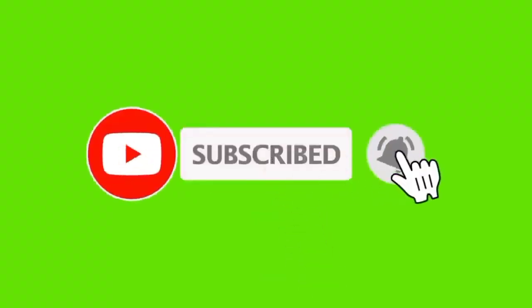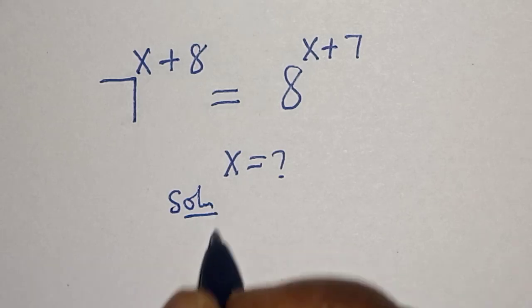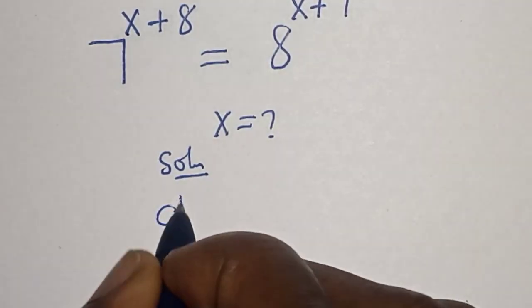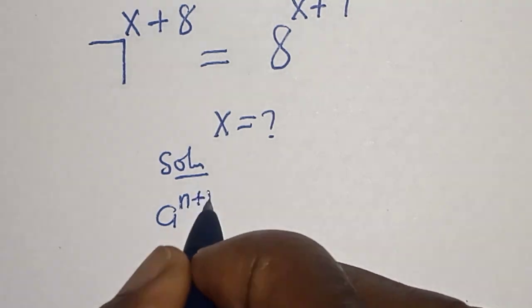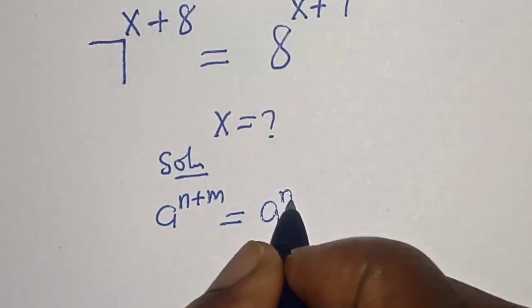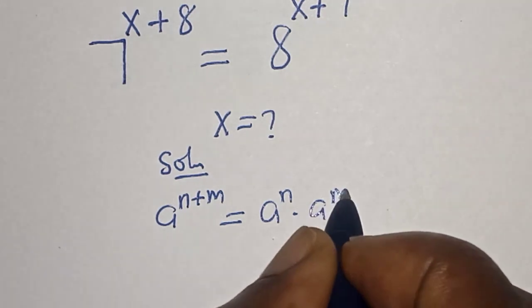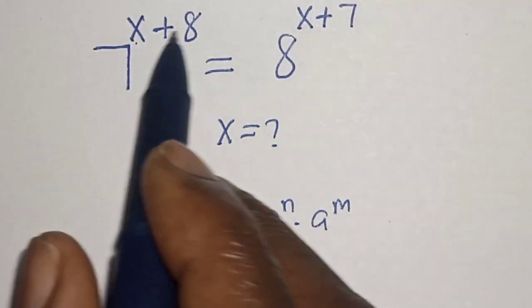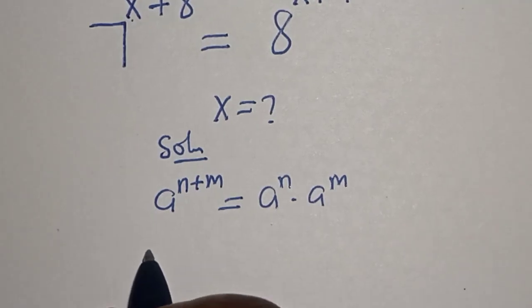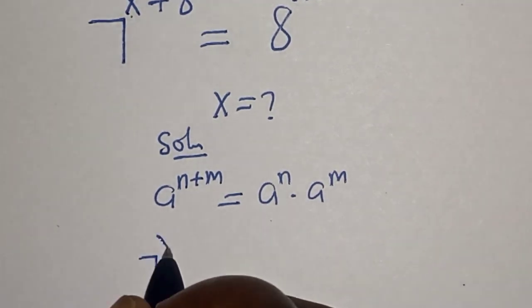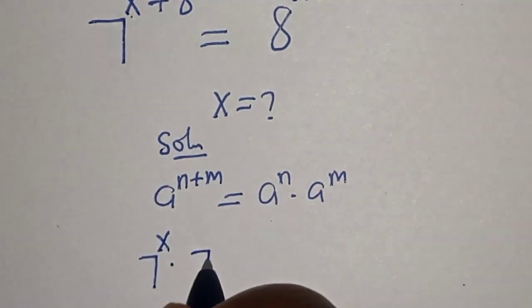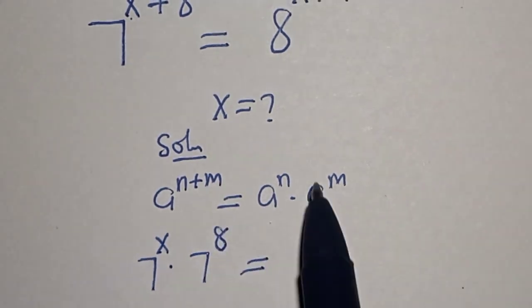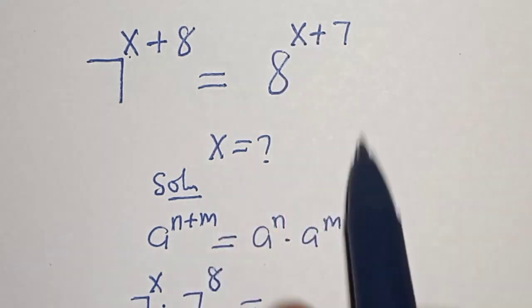Solution. Take note of this rule: a raised to the power n plus m is equal to a raised to power n multiplied by a raised to power m. Then 7 to the power of x plus 8 can be written as 7 to the power of x multiplied by 7 to the power of 8.